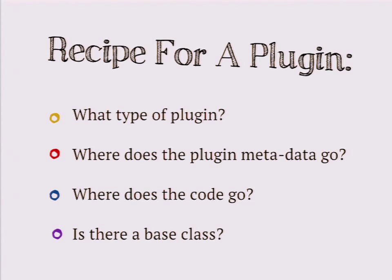Let's look at creating a simple plugin. When you sit down to write a plugin and you're going to create a new block, here are the things you'll need to know about that plugin type in order to create a new instance. You need to know what type of plugin you're creating — the plugin type, like block or field widget or field formatter, defines the recipe for the rest of how the plugin is going to be created.